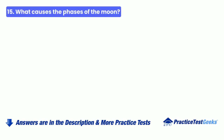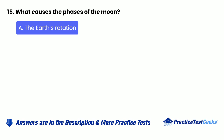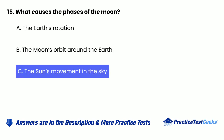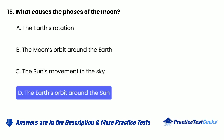Question 15: What causes the phases of the moon? A. The Earth's rotation. B. The moon's orbit around the Earth. C. The sun's movement in the sky. D. The Earth's orbit around the sun.